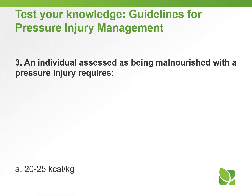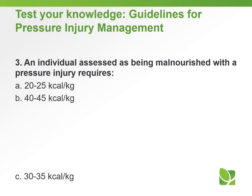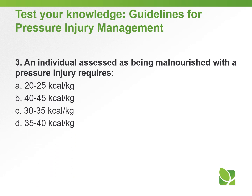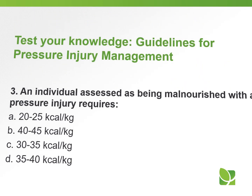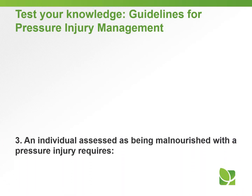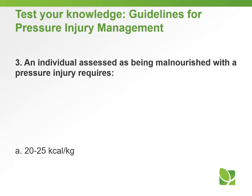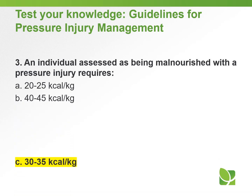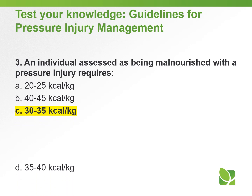Question number three: an individual assessed as being malnourished with a pressure injury requires — A) 20 to 25 kilocalories per kilogram, B) 40 to 45 kilocalories per kilogram, C) 30 to 35 kilocalories per kilogram, or D) 35 to 40 kilocalories per kilogram. The answer is C) 30 to 35 kilocalories per kilogram.